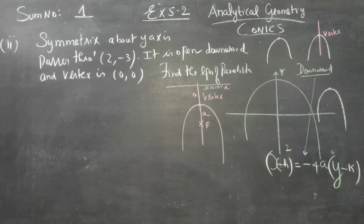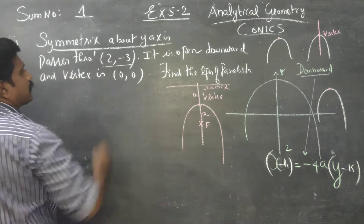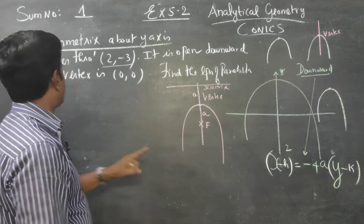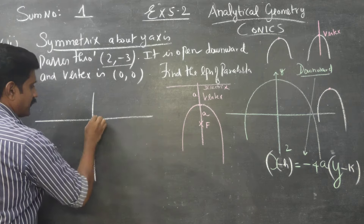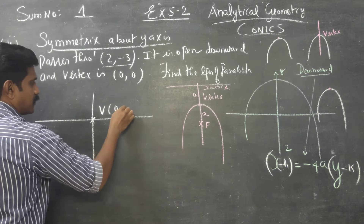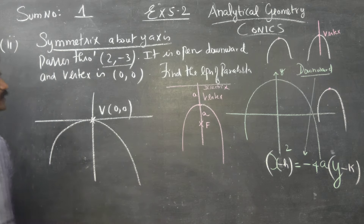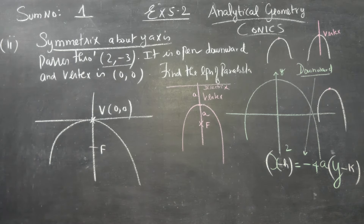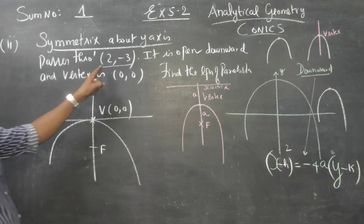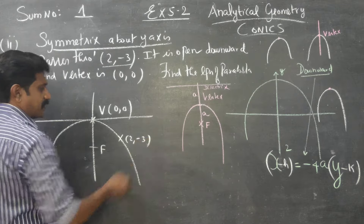Now entering the sum. The parabola is symmetrical about the x-axis, passes through the point (2, minus 3), is open downward, and the vertex is (0, 0). We have a lot of information: vertex is (0, 0), the parabola is open downward, and it passes through the point (2, minus 3).